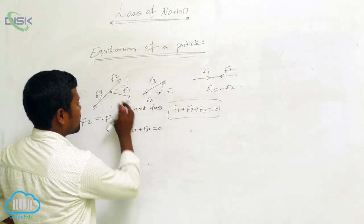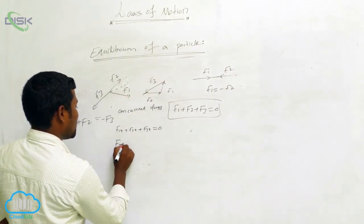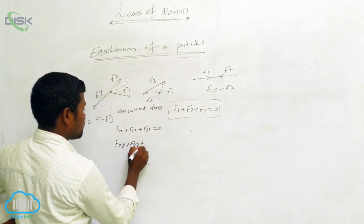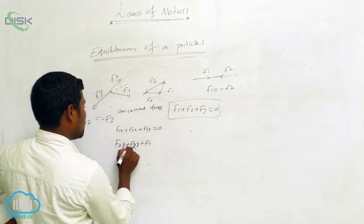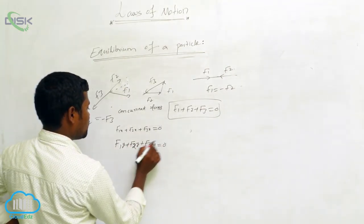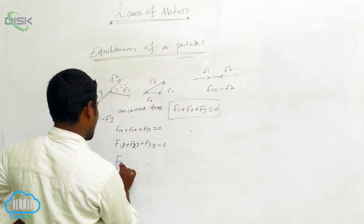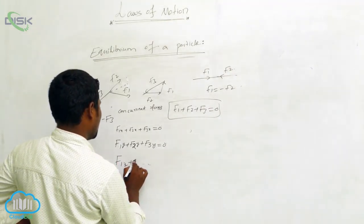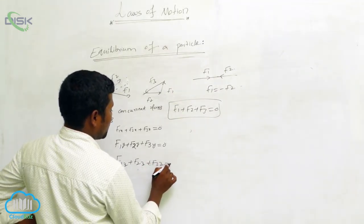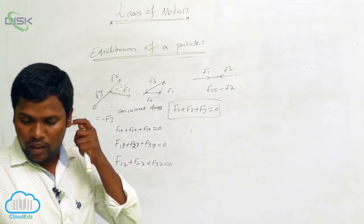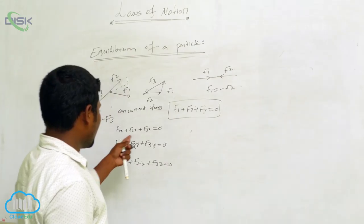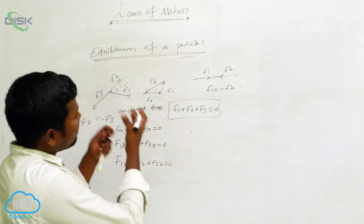We can write the component equations: F1x plus F2x plus F3x equals 0 for the x-direction. Similarly, F1y plus F2y plus F3y equals 0, and F1z plus F2z plus F3z equals 0. If the object or particle is moving in three dimensions, we write these three different equations.